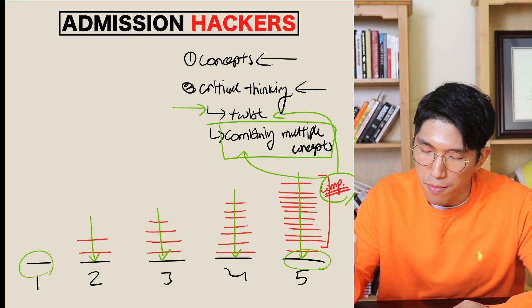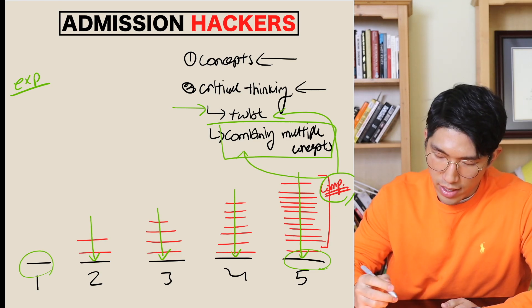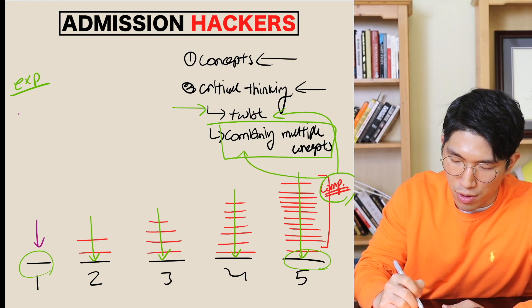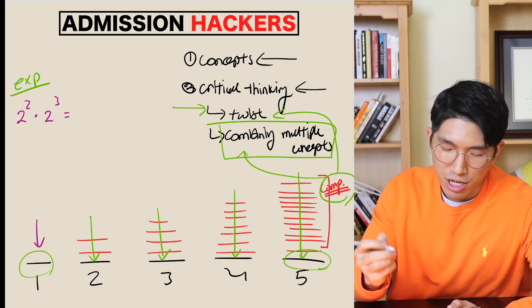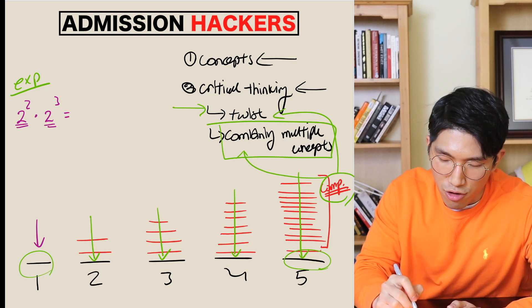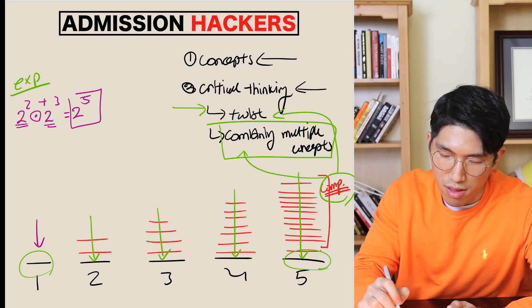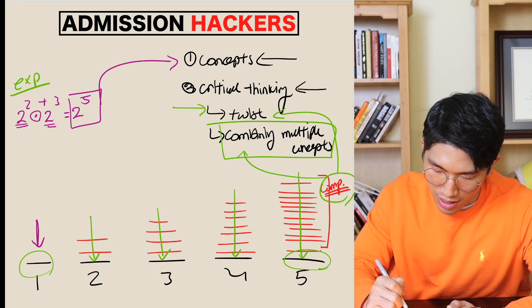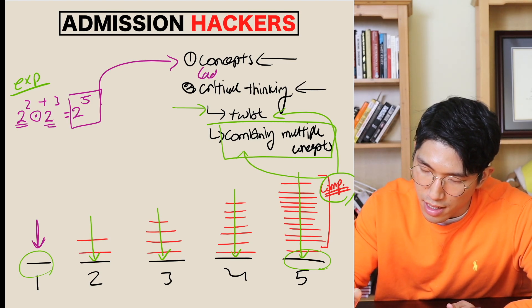But what do I mean by twisting? Well, let me give you a quick example. We're gonna talk about an example with exponents. Now let's say difficulty one looks something like this. The question asks you to find out exactly what 2 to the second times 2 to the third is equal to. And 2 to the second times 2 to the third is actually really simple. Same base, and you're multiplying, which means you're adding the exponents, that means your answer is going to be 2 to the fifth. This question is just testing the concept, because this is a difficulty level one question. And the concept that we used was adding exponents, right?